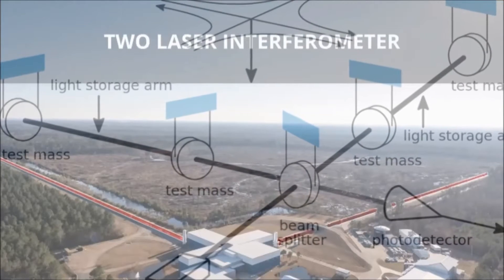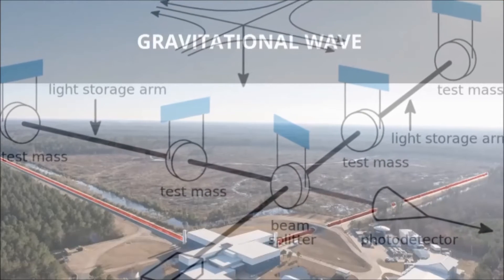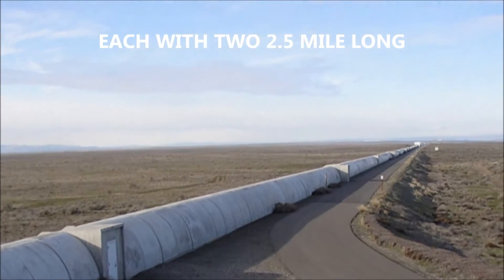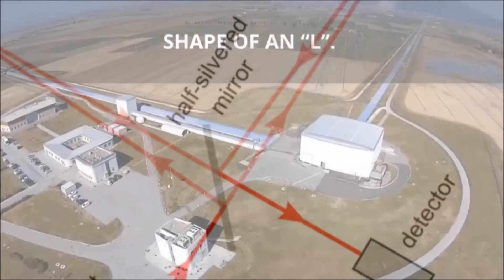The team had constructed two laser interferometer gravitational wave observatories, each with two 2.5-mile-long arms arranged in the shape of an L.